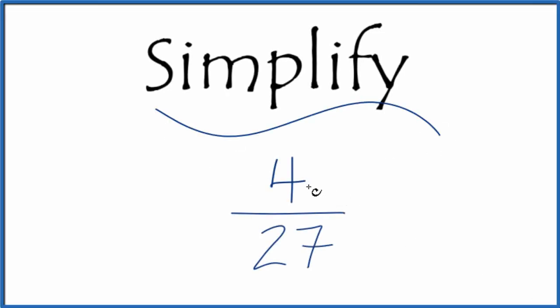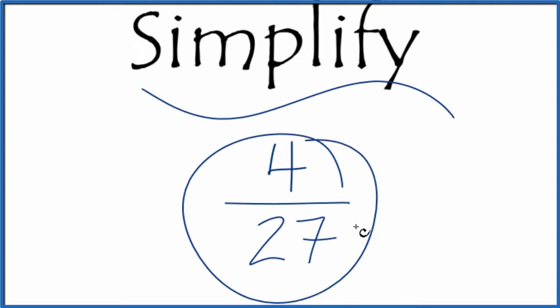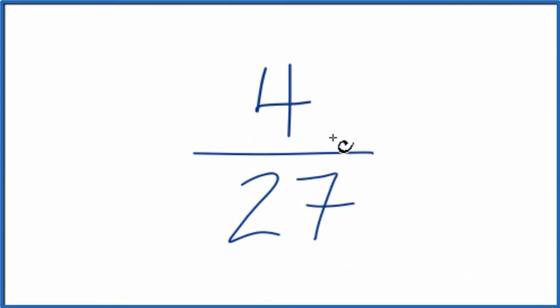Let's simplify this fraction 4 over 27. What we're trying to do is find another fraction that's equal to 4 over 27. It's an equivalent fraction with the same value, but we've reduced it to simplest or lowest terms.